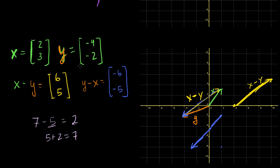Let me make that point very clear. We can draw x as 2, 3 — go right 2 and up 3. Negative x is minus 2, minus 3. If I start here and go minus 2 then minus 3, negative x looks just like x — it's parallel with the same magnitude, but pointing in the exact opposite direction. This is a good intuition to have really seared into your brain.